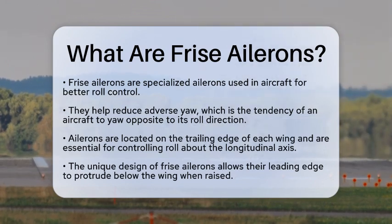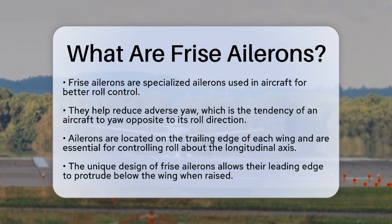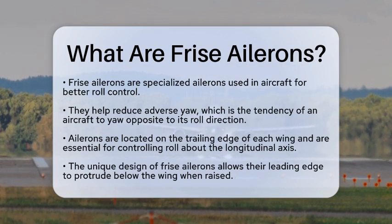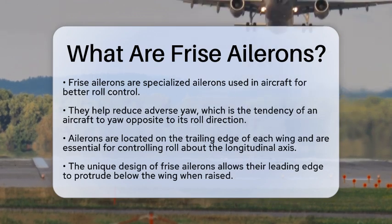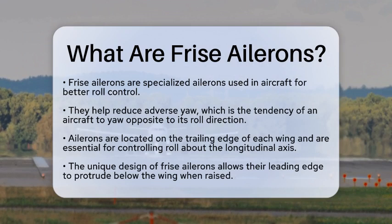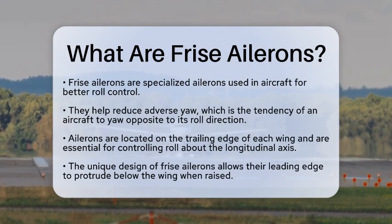Fry's ailerons are a special type of aileron used on many aircraft to improve roll control and reduce adverse yaw. Adverse yaw is when an airplane yaws opposite to the direction it is rolling, which can make flying less coordinated. Ailerons are control surfaces located on the trailing edge of each wing, and they play a vital role in controlling the aircraft's roll about its longitudinal axis.